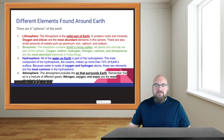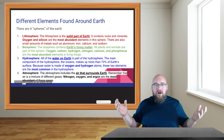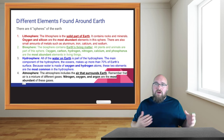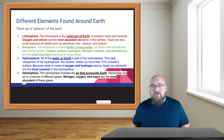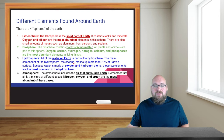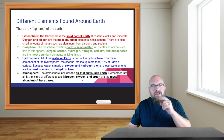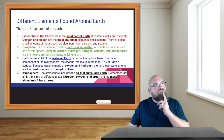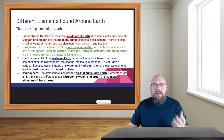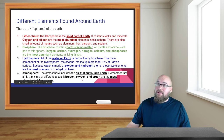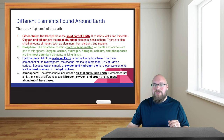If you pay attention, you'll notice that oxygen was found in the lithosphere, the biosphere, the hydrosphere, and the atmosphere. So what conclusion can you make? Oxygen is likely the most abundant element found on Earth overall. If it's found in all four spheres and is one of the most abundant in each, it's the element we can find the most of on our planet.